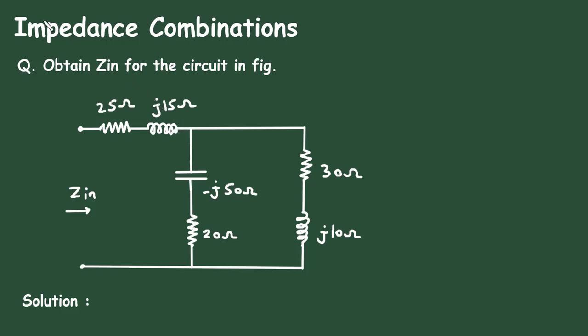In this video we will see an example on impedance combination. Question: obtain Zin for the circuit in figure. Here for this circuit we have to find the value of this input impedance Zin.